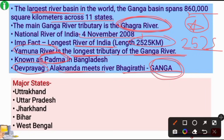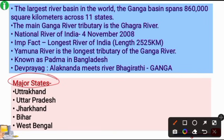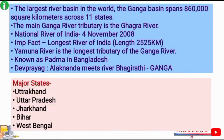The Ganga is the longest river of India. It originates in Uttarakhand, then flows through Uttar Pradesh, Jharkhand, Bihar, and West Bengal. The major part of its flow is through Uttar Pradesh state.